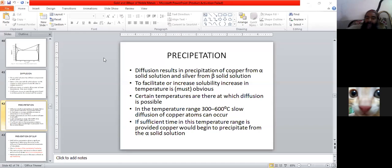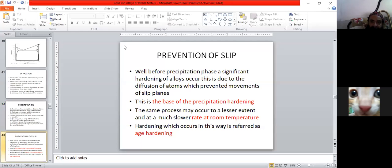In the 300 to 600 degree range, slow diffusion occurs. If sufficient time in this temperature range is provided, copper will begin to precipitate from the alpha solid solution. The copper will be precipitated and removed from the silver. So this is going to be precipitated.